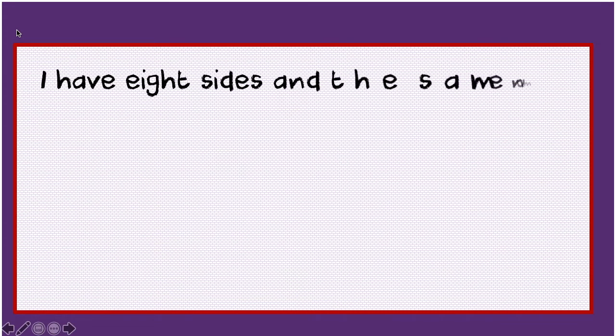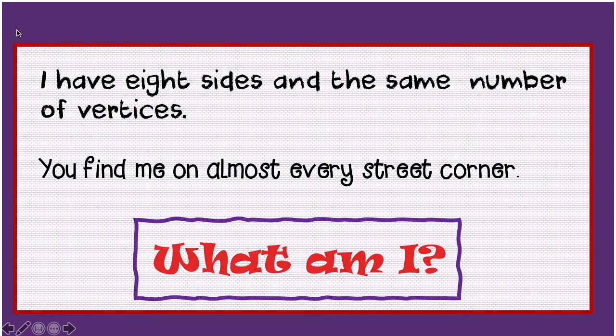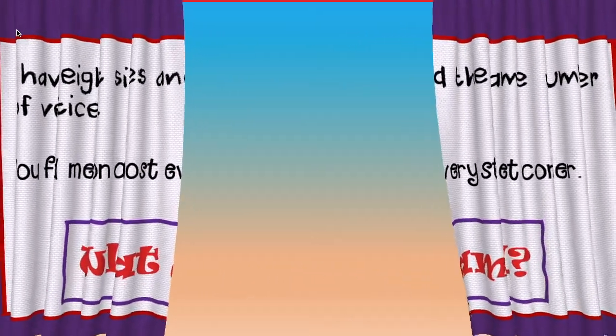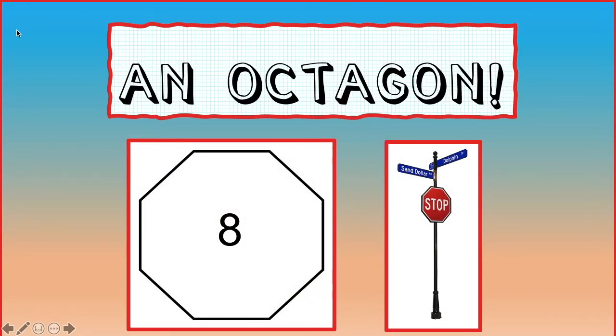Here is riddle number five. I have eight sides and the same number of vertices. You find me on almost every street corner. What am I? An octagon. You got it.